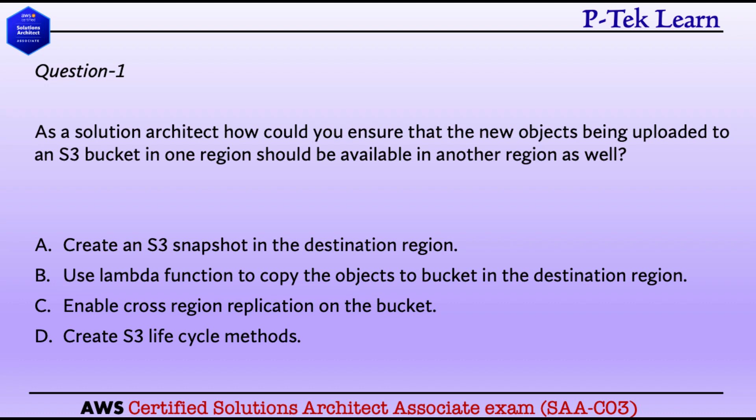Using a Lambda function can be done, but it is an overhead. The object needs to be automatically copied to another bucket in a different region, so this option is not viable. Option C: Enable cross-region replication on the bucket. This is the right answer — it is a configuration done at the bucket level in S3 that enables automatic asynchronous copying of objects across buckets in different AWS regions. Option D, creating S3 lifecycle methods, is not the right answer.